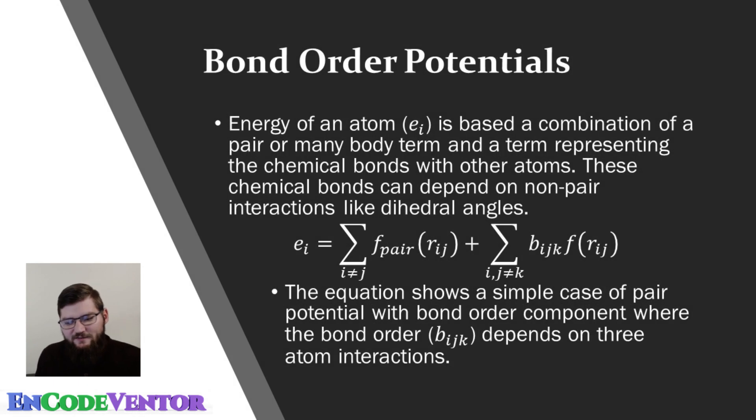Finally, we're going to talk about bond order potentials. And again, usually it's a combination of a pair potential and a bond term. It can also have a many body term in there. But this bond term is the main unique thing about bond order potentials. Essentially, this bond term represents the energy contribution of the bonds between bonded atoms. So for example, between a carbon and hydrogen pair, there's going to be a strong chemical bond. And so the contribution of the energy of that bond would come in through this term.